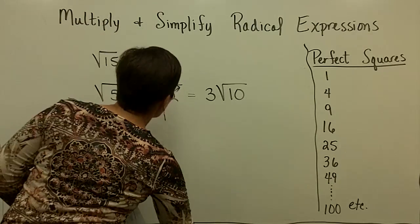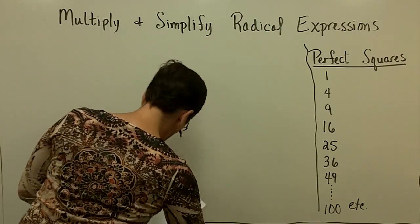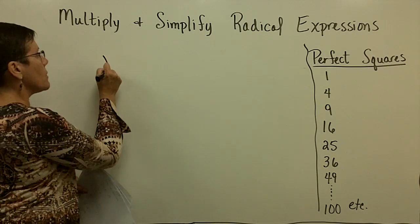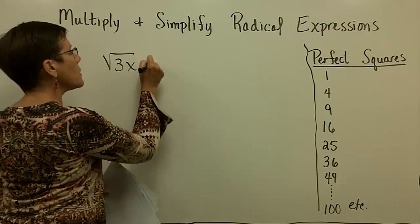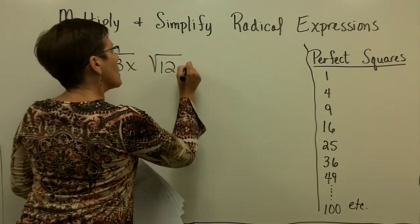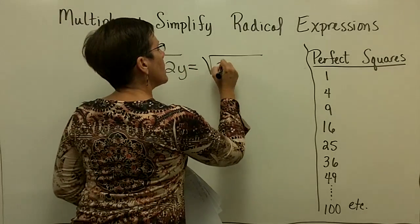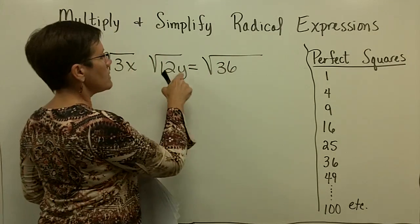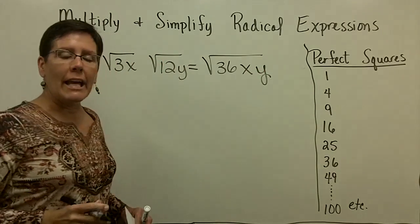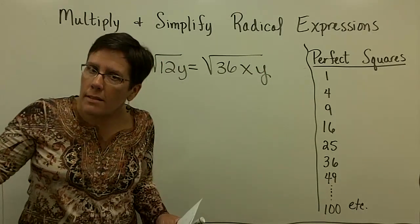And so sometimes it's not all that convenient to break them into their prime factors. Here's an example. I could, in this case, just multiply 3 times 12 and get 36, and x times y is x times y, and the square root of 36 is 6.